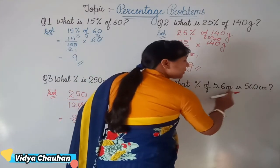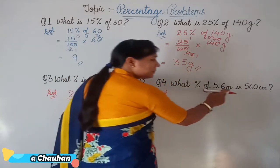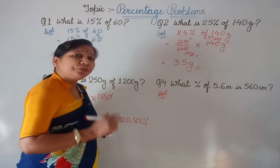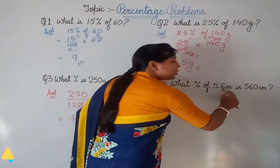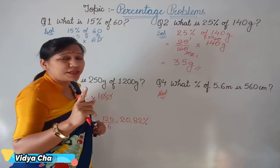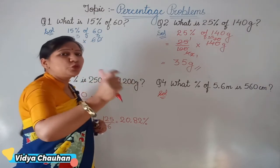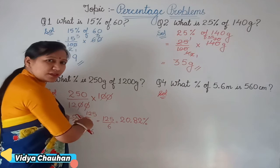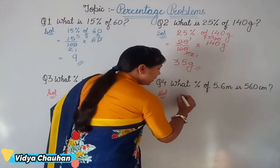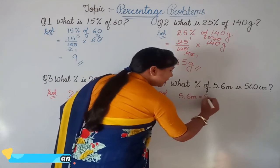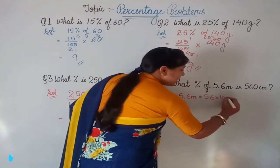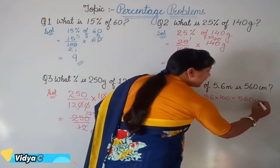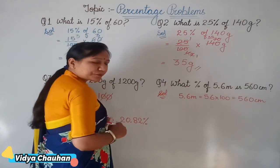Here one value is given in meters and the other in centimeters, so we cannot find the percentage directly — both units must be the same. We cannot do this if the two values are in different units. So first, convert 5.6 meters into centimeters: since 1 meter equals 100 centimeters, multiply 5.6 by 100, which gives 560 centimeters.